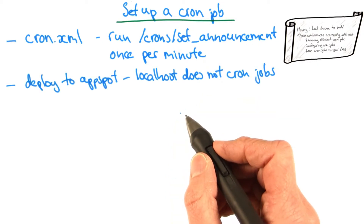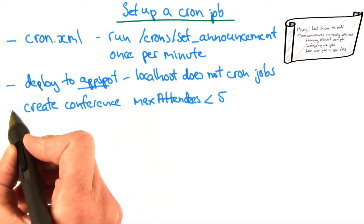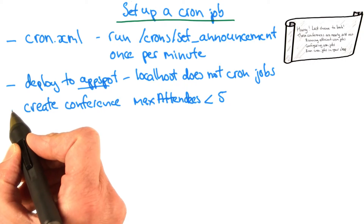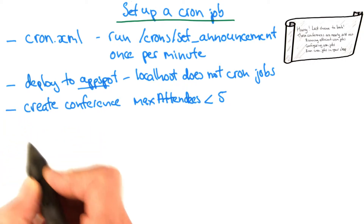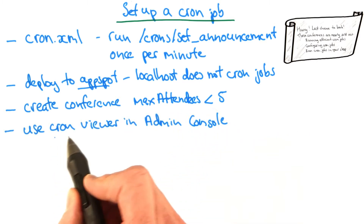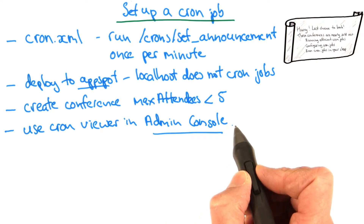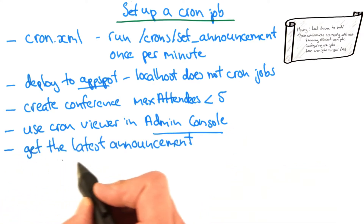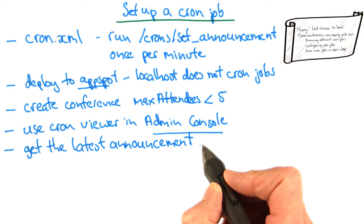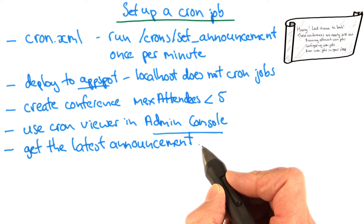So when you're ready, go ahead and deploy your app to AppSpot. Then add one or more conferences that have between 0 and 5 seats available. The easiest way to do that is just to create a new conference with max attendees less than 5. Then use the cron viewer in the admin console to make sure that your cron job is running. And then go ahead and get the latest announcement to check that it did get updated. You can use either the memcache viewer or the APIs console to get the latest announcement.